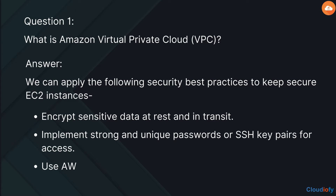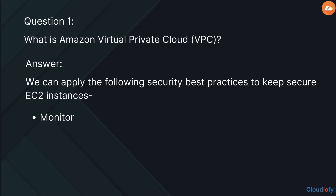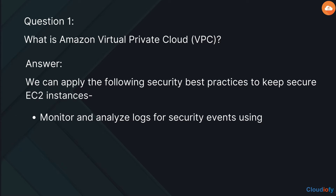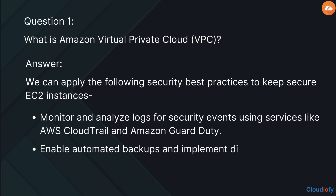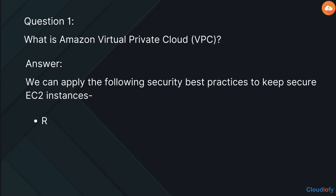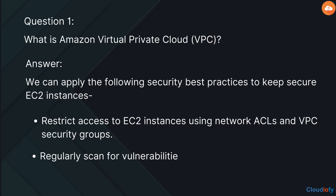Implement strong and unique passwords or SSH key pairs for access. Use AWS Identity and Access Management (IAM) to manage user permissions. Monitor and analyze logs for security events using services like AWS CloudTrail and Amazon GuardDuty. Enable automated backups and implement disaster recovery strategies. Restrict access to EC2 instances using network ACLs and VPC security groups. Regularly scan for vulnerabilities.